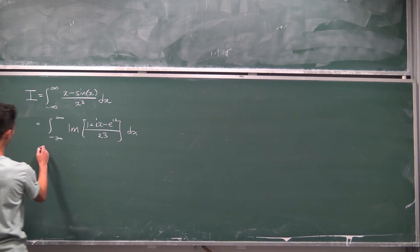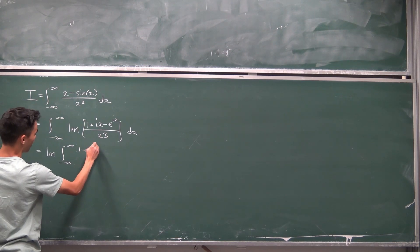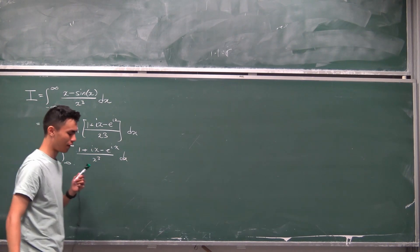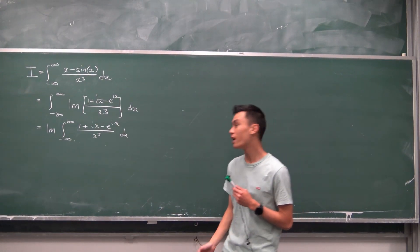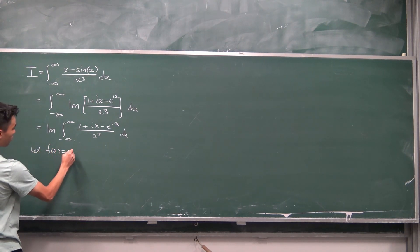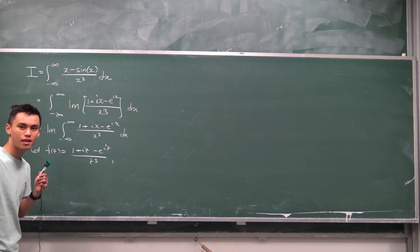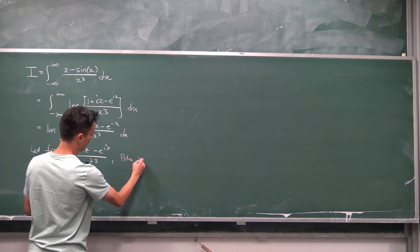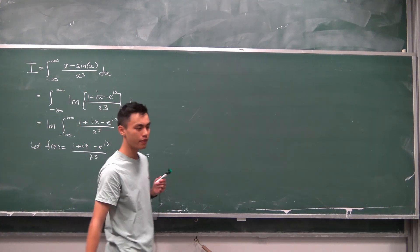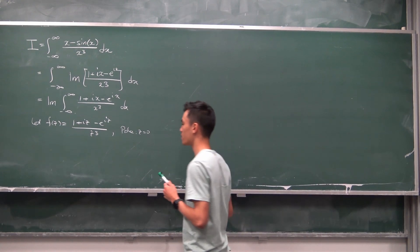The next thing we can do is bring the imaginary part operator outside. So this integral becomes the integral of (1 + iz − e^(iz)) divided by z cubed. This is the function we're going to be contour integrating. So we define f(z) to be equal to (1 + iz − e^(iz)) divided by z cubed. You might notice there's going to be a pole at z equals zero.